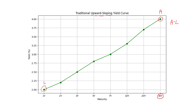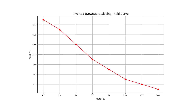Think about what happens if this yield curve inverts. If the yield curve becomes inverted and the bank still has its liabilities on the short end of the yield curve, all of a sudden they're going to have to start paying more interest to their deposit holders, whereas their assets on the long end of the yield curve won't adjust to the new interest rate. They'll be fixed, but now if they're paying out more on their liabilities than they're earning on their assets, the bank will have a negative net interest income.